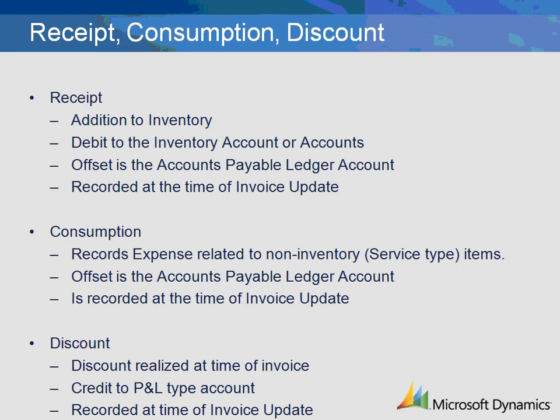The receipt transaction is a setup related to the recording of the inventory receipt in the ledger. The ledger account for receipt is typically the inventory account or accounts that your company uses for tracking the value of your inventory. The consumption transaction is the setup related to the recording of the receipts of service type or non-inventory items that are purchased using the purchase order module. Typical items that might fall in this category are shop supplies or office supplies that are not considered part of the inventory value and are set up as an item type of service. The ledger account for consumption is typically an expense type or profit and loss type account that will be debited at the time of inventory update.